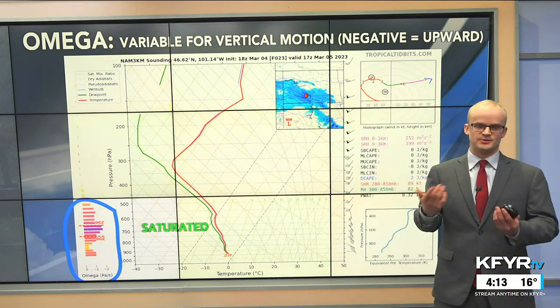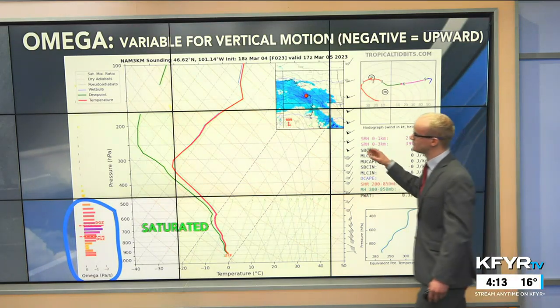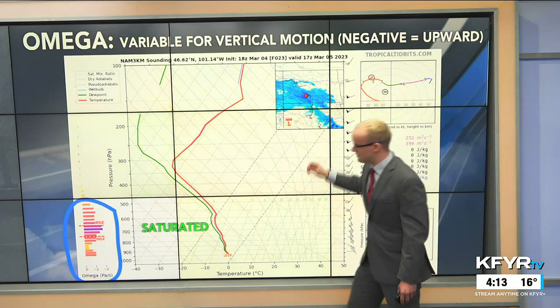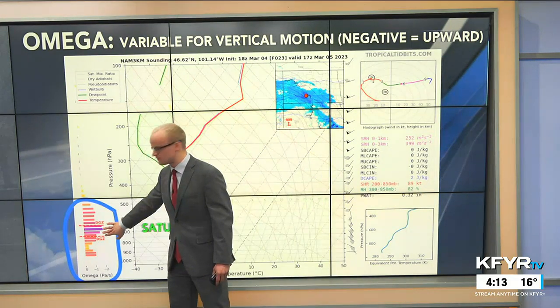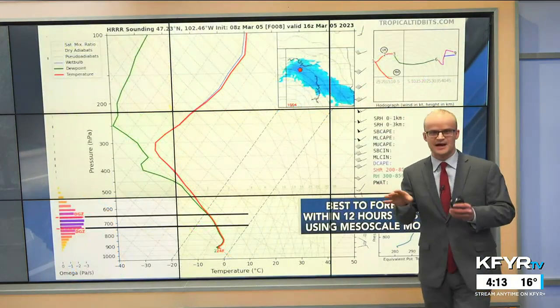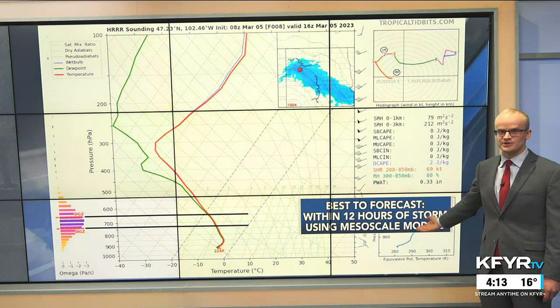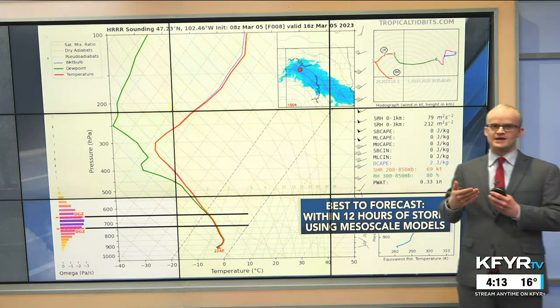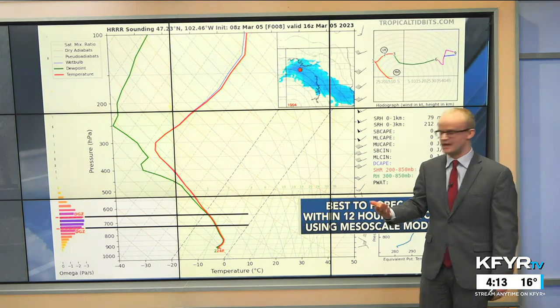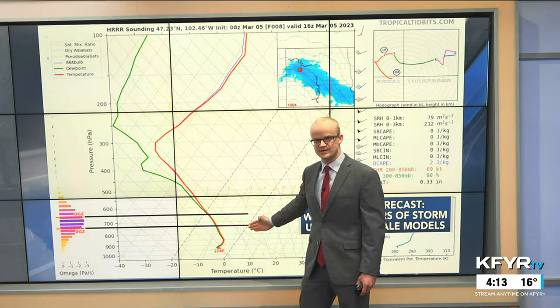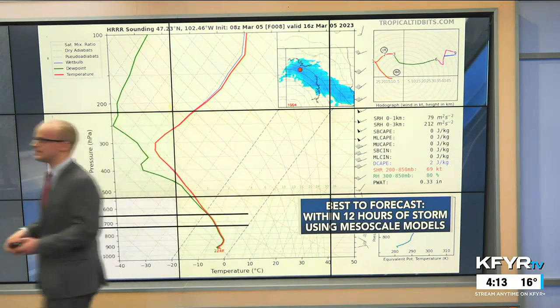This is a plot called a sounding, or skew-T plot, which we get when we launch weather balloons, but we can also view these on forecast models. Within the heavy snow band, we had a saturated layer of the atmosphere within the dendritic growth zone and a lot of vertical motion indicated by that negative Omega value. These are best forecast only within about 12 hours of the actual event, which is why there's uncertainty — we don't get those fine-tuned details until closer to the snowstorm. But we can look at where the growth zone is, where vertical motion is strongest, and determine if the band will pivot over an area for a prolonged period — like what happened southwest of Bismarck on Sunday, leading to impressive snowfall totals not far from areas that got much less snow.